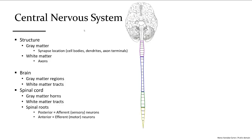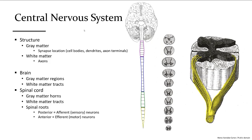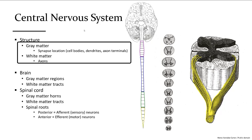The spinal cord is made of a long column of nervous tissue comprised of gray matter and white matter. Gray matter is where synapses occur — you'll find cell bodies, dendrites, axon terminals, and neurotransmitters here. White matter is where the axons of neurons are found, acting like wires delivering electrical impulses up to the brain or from the brain out to the body.